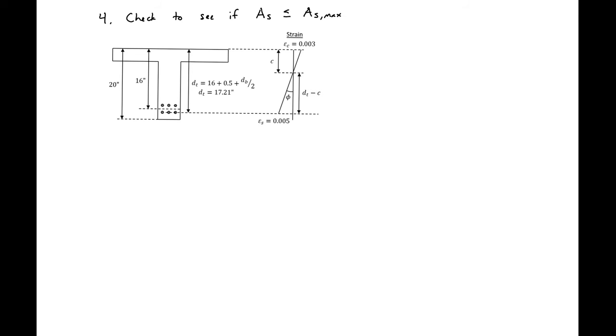The last check is to see if the area of steel that we have in our section is less than the maximum area of steel that we can have if we still want to be tension controlled. We'll do this using our strain diagram and our section. ACI allows us to have tension controlled if we have a strain of 0.005 or greater in the bottom layer of our steel. We need to find the distance from the top of our section to the center of that bottom layer of steel. It's the d plus a half inch, which is half of the spacing between the two layers of bars, plus db over two, which is the radius of the bottom layer of bars.